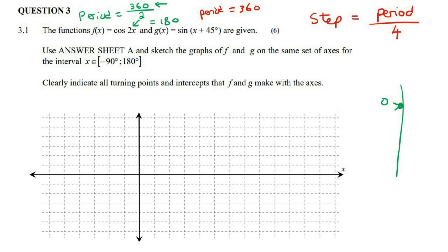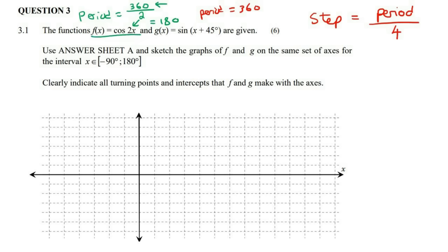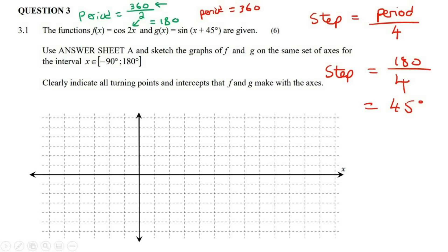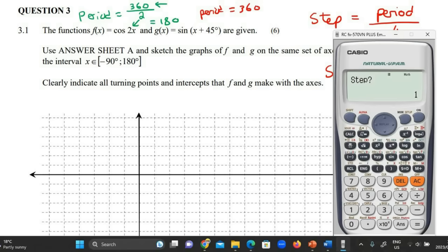So we have a slightly unusual scenario: two graphs to draw, one with a period of 360 (the sin graph) and one with a period of 180. You need to take the smaller period and use that one. So for your step, you're going to say 180 divided by 4, which is 45 degrees.